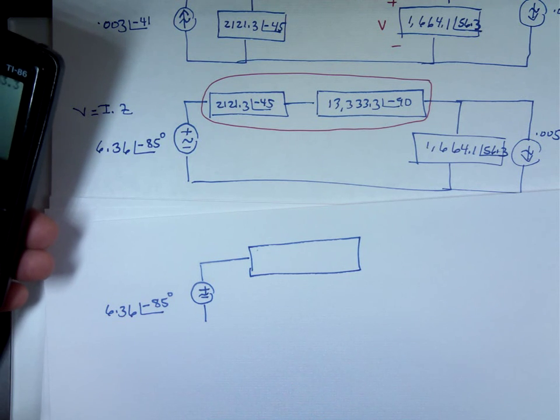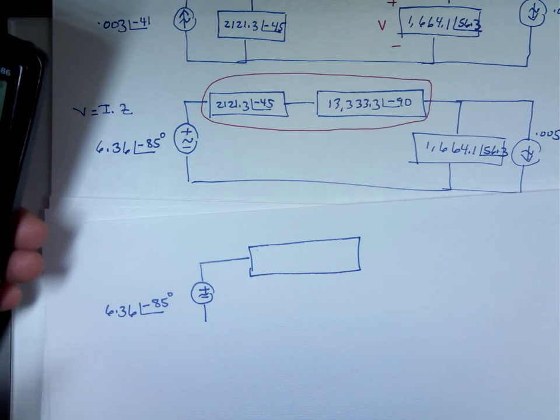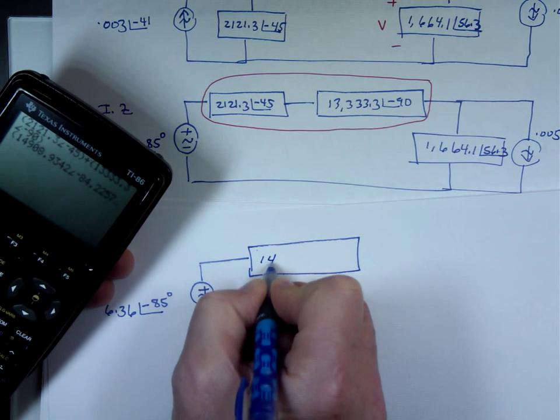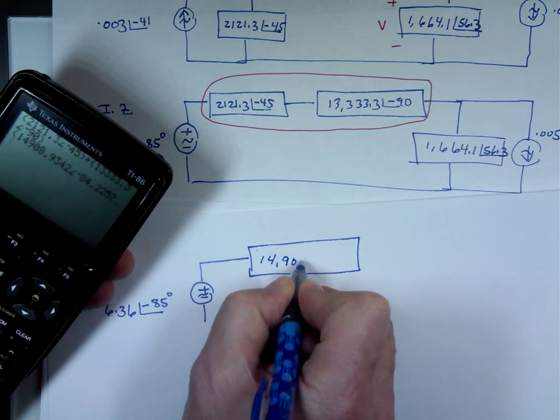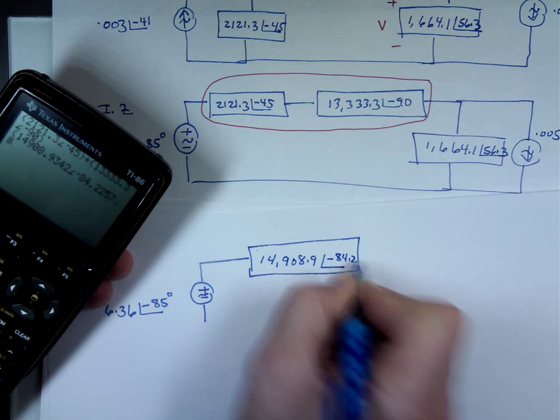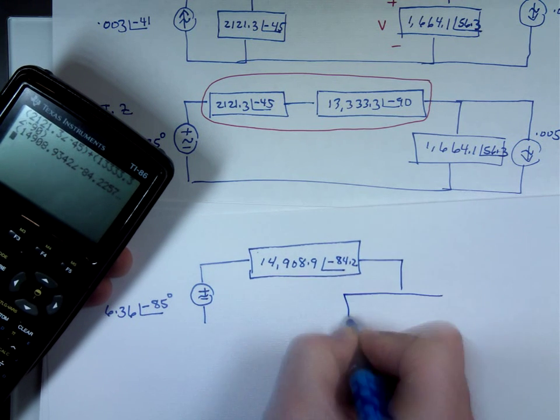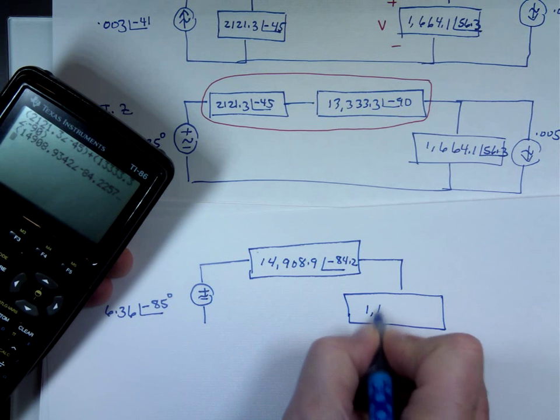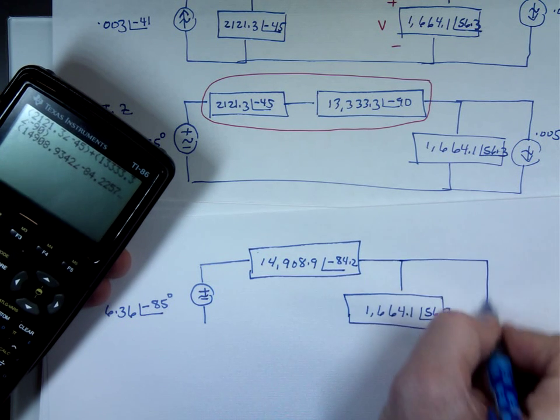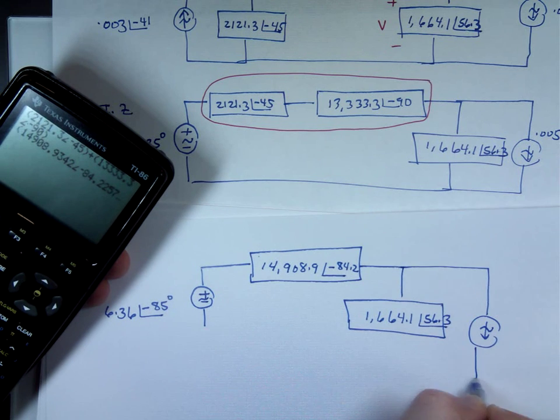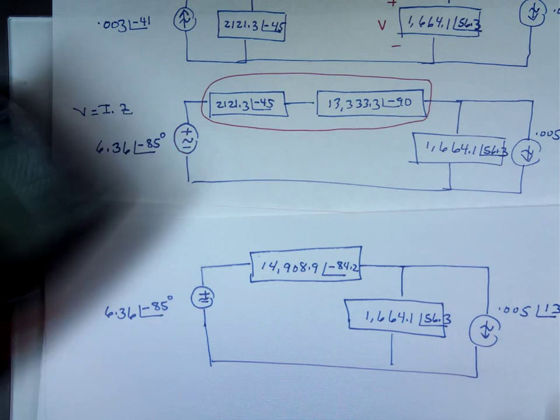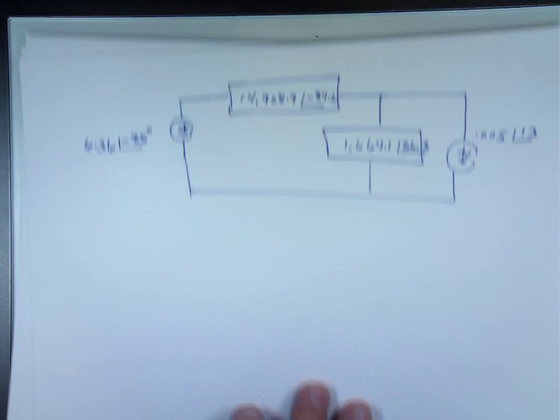So hopefully I'm pushing all the right buttons. Hope somebody's doing them too. So if you push all the right buttons, you're getting 14,908.9 angle negative 84.2.